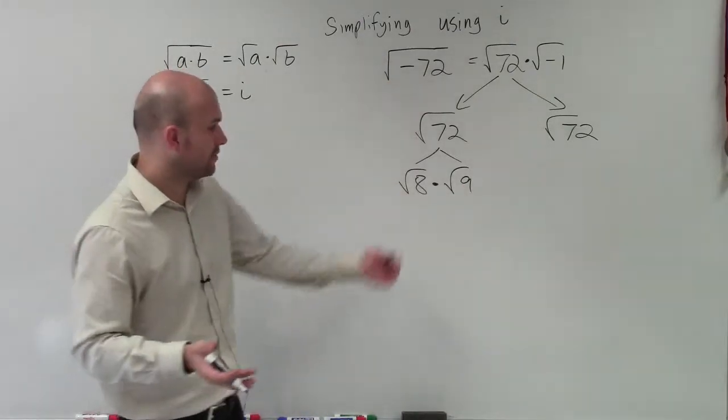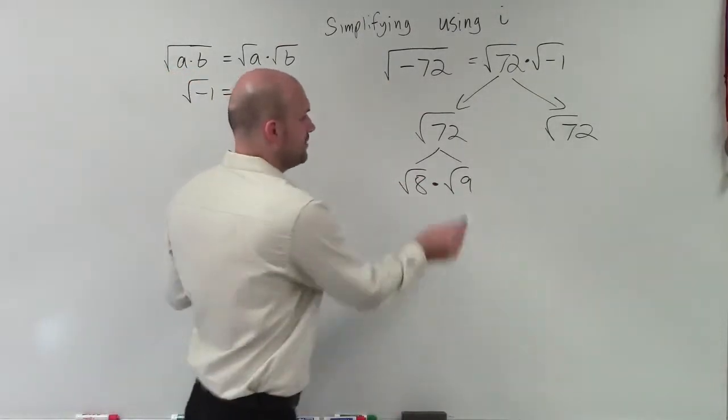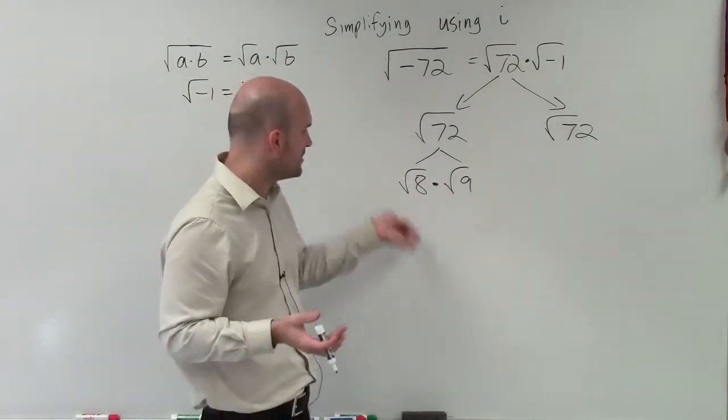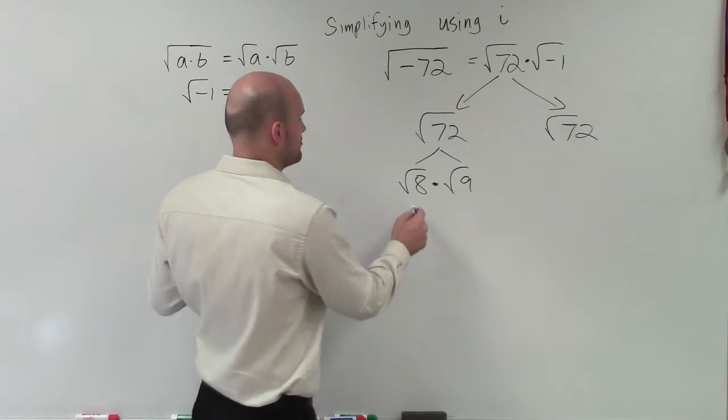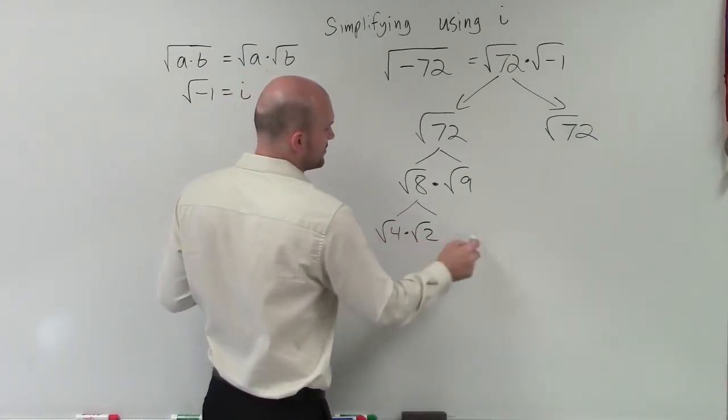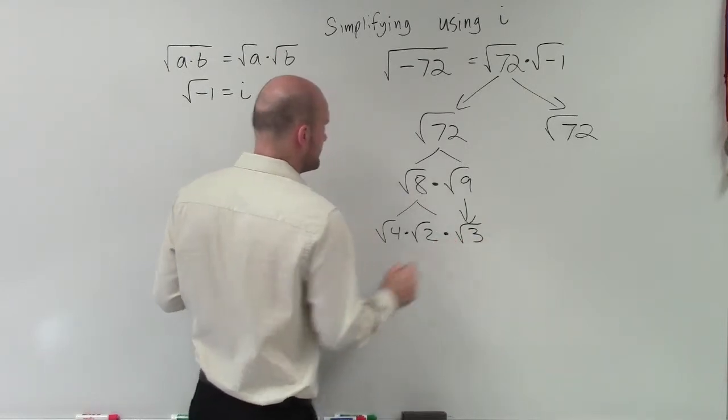But then we want to say, well, can we continue to simplify this? We can simplify the square root of 9 into 3, right? Because we know we had to make sure we broke it down into a square number. But then the square root of 8, we can also break that down even further to the square root of 4 times the square root of 2 times the square root of 3.